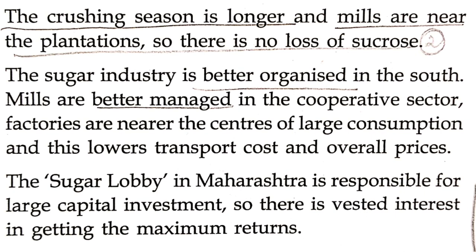The crushing season is longer in South India than in UP and Bihar, because in UP and Bihar the winter is prolonged and temperatures are not suitable, whereas winter in South India is for a limited period. Temperatures are more conducive for sugarcane growth, producing better quality cane. The mills are near the plantations, so there is no loss of sucrose — this is a very important point to underline.